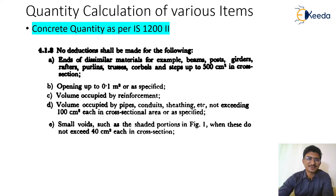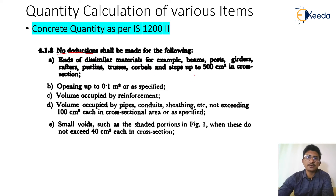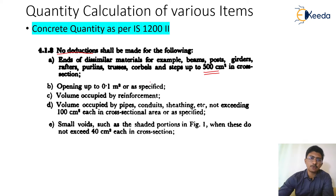Here is a screenshot from the IS code. Now we are talking about deductions — specifically where you are not expected to make deductions. Whenever there are ends of dissimilar materials overlapping, such as beams, posts, girders, rafters, purlins, or trusses, whose area in cross-section is not more than 500 cm², no deduction is required. Similarly, for openings in concreting whose area is not more than 0.1 m², no deduction is required.